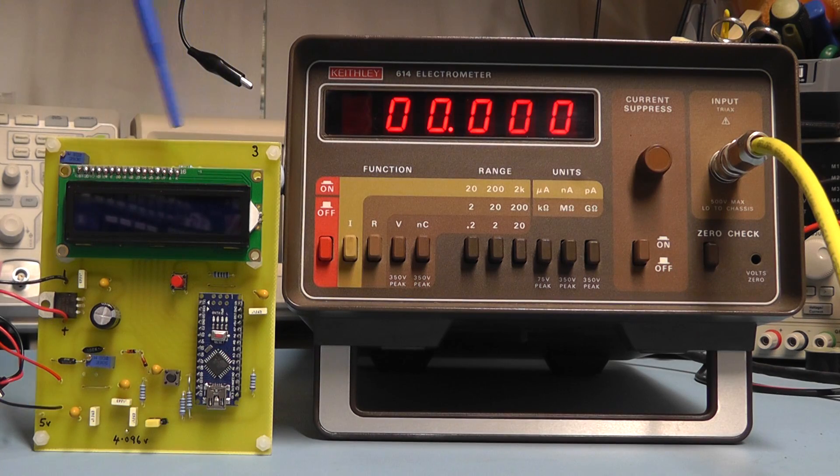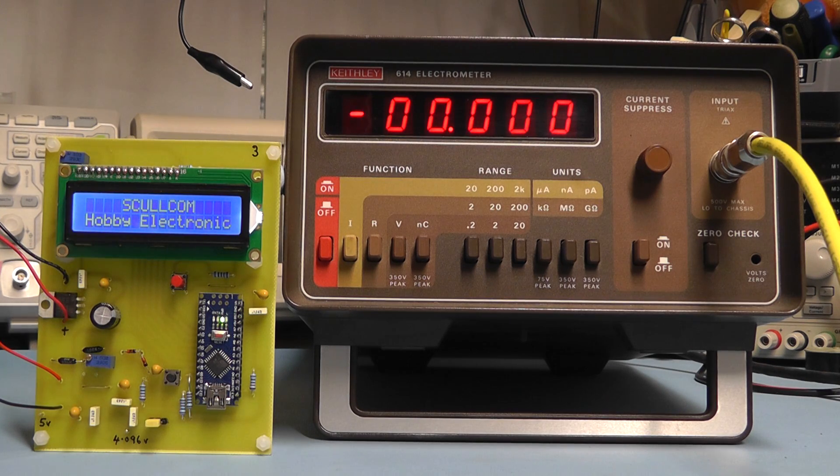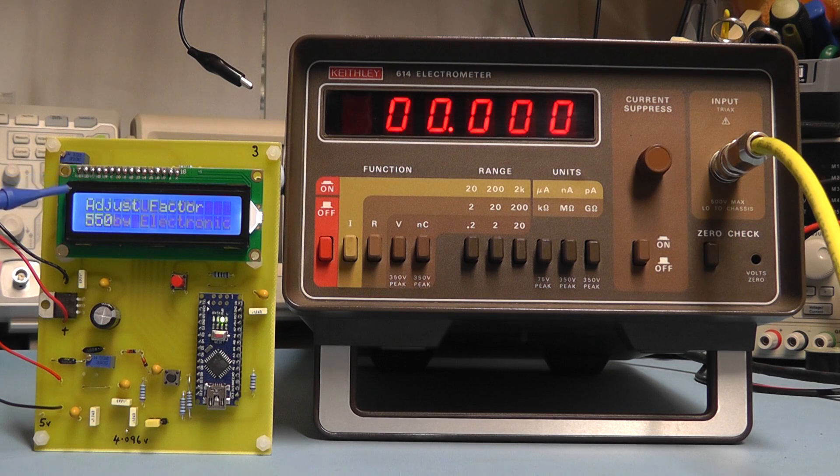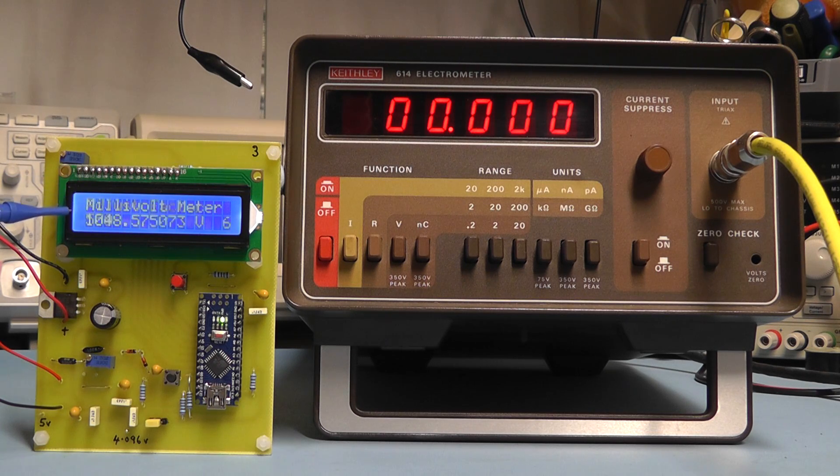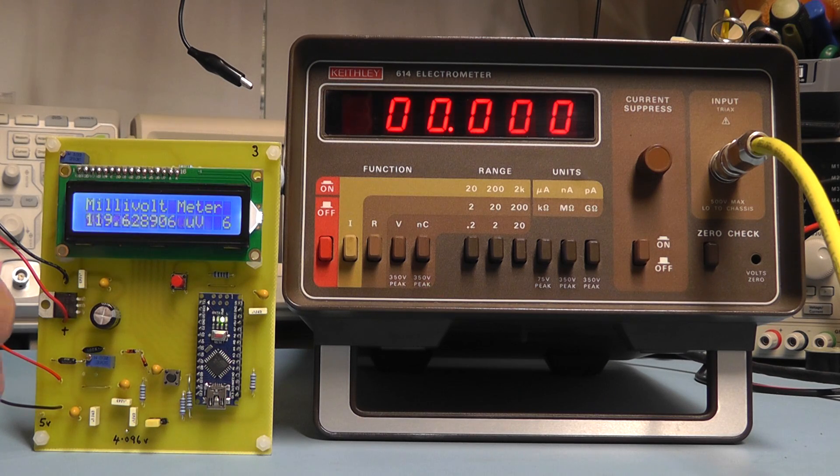I have our millivolt meter here alongside my Keithley 614 electrometer which is very good at measuring accurately low voltages, so we can compare the reading on the Keithley with what we finally get here on the millivolt meter. And so what we'll do first of all is we'll power the millivolt meter, I'll just connect a 9 volt supply. So it goes through its normal start-up sequence and it shows initially the adjustment factor and then we've nothing on the input at the moment so we're just getting some random noise reading there. So what I'll do now I'll short out the input leads.